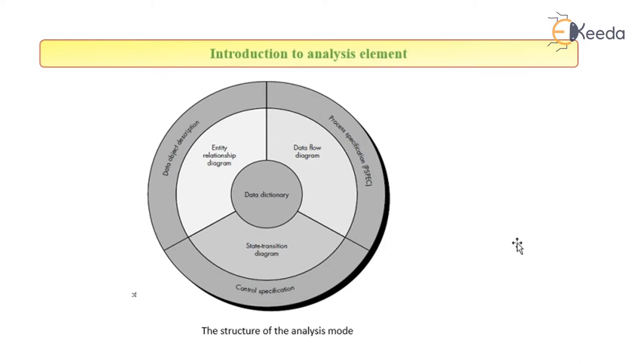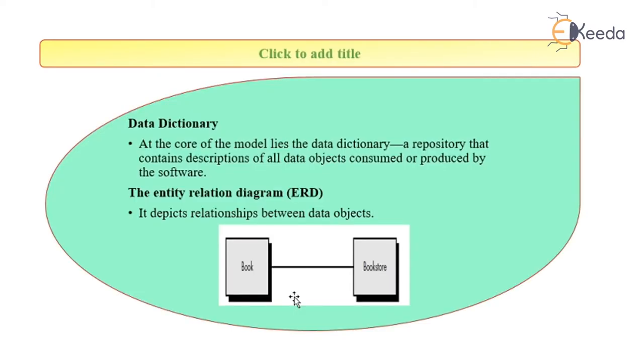Introducing the analysis elements. This diagram clearly depicts what analysis elements are. At the core, we have the data dictionary. Around it is the entity relationship diagram, then the data flow diagram, and state transition diagram. The entity relationship diagram is the data object description. Data flow diagram is the process specification. And state transition diagram is the control specification. Let us move to data dictionary.